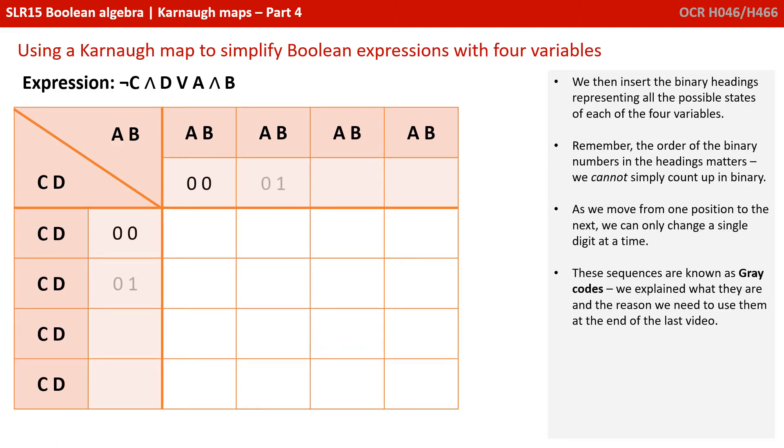We then insert the binary headings representing all the possible states for each of the four variables. Remember, the order of the binary numbers in the headings matters. We cannot simply count up in binary. As we move from one position to the next, we can only change a single digit at a time. These sequences are known as grey codes and we explained what they are and the reason we need to use them at the end of the last video.